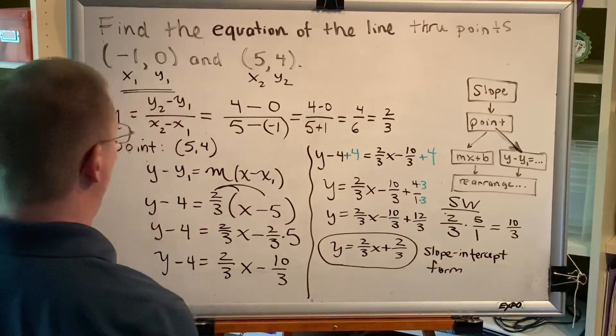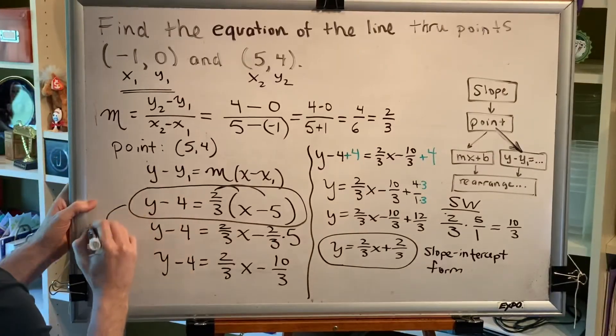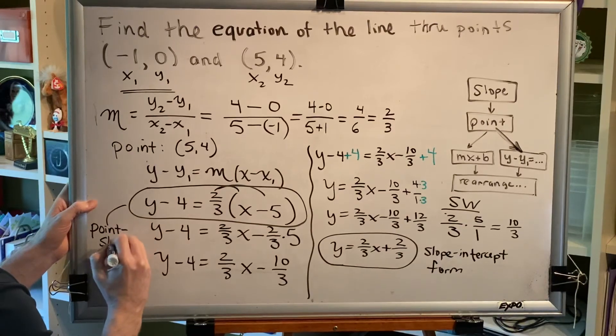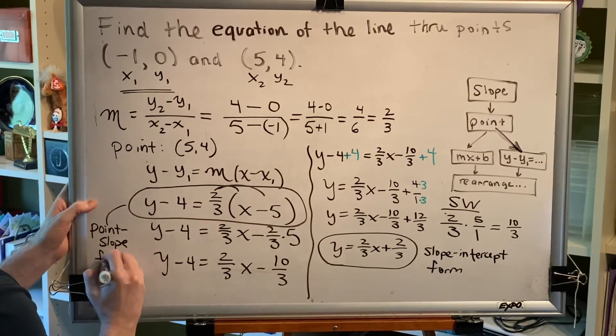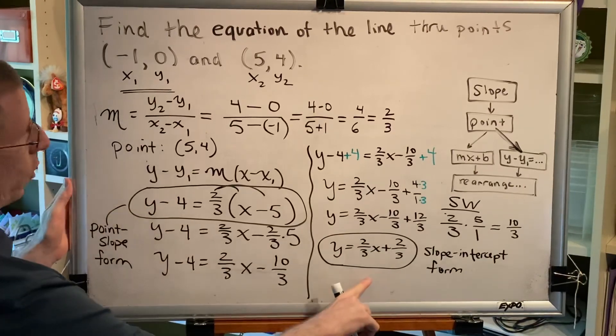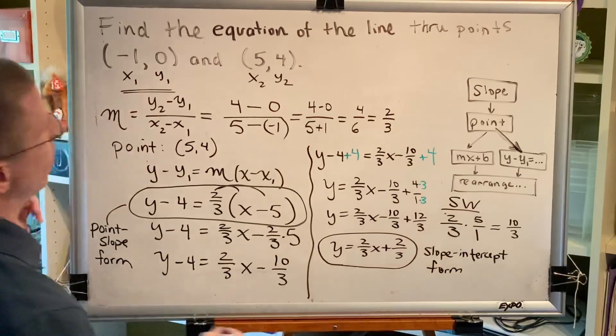And for the record, this was the equation of our line in the point-slope form. For some problems you can stop here, but for many others you have to take it all the way, which is why we have a rearranged step at the end of our flowchart.